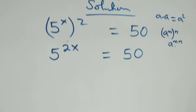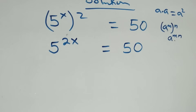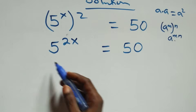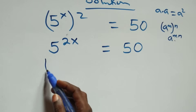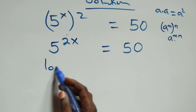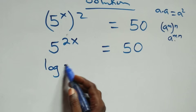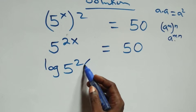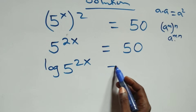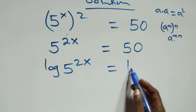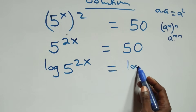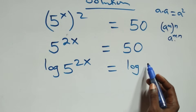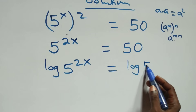The next step here: we take the log on both sides, and we have log of 5 raised to power 2x equals to log 50.